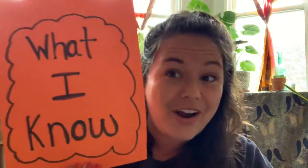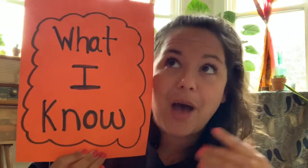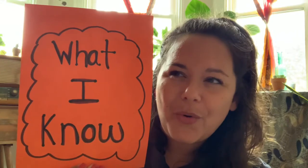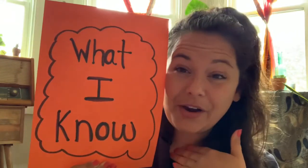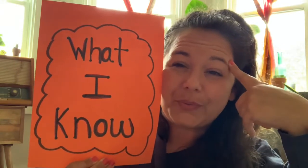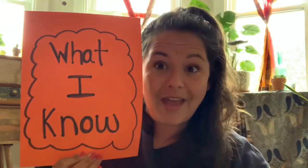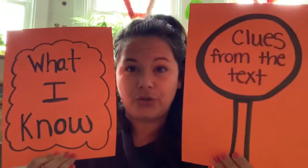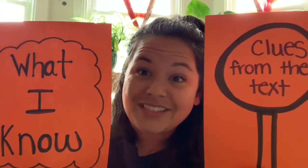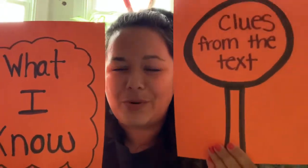So, good readers are like detectives. And what good readers do is they take what they already know — so what I know about a topic, or maybe I've read a book like this before, or any past experiences I've had, whatever is in my brain, everything that I know — and I'm going to put it together with clues from the text. This could be words, or you could look at the pictures, any clues that the book gives you.